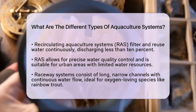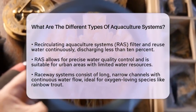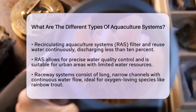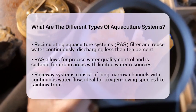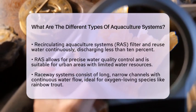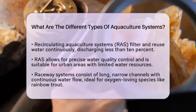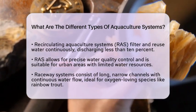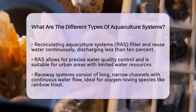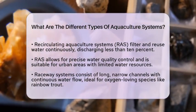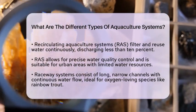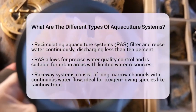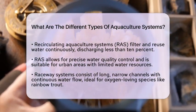Inshore and offshore cage farming extends the cage culture concept into deeper waters. Inshore cages are closer to the shore, while offshore cages are placed in more exposed areas. These systems help reduce pressure on wild fish stocks by providing alternative seafood sources. However, they do face challenges like storms and environmental regulations.